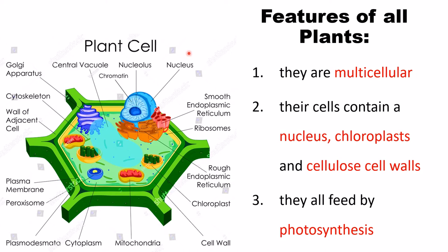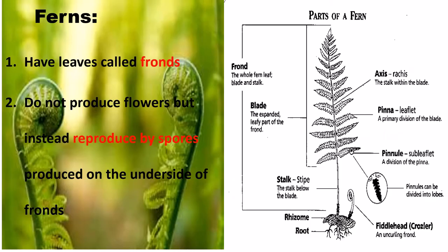The main features of all plants: plant cells are multicellular, their cells contain a nucleus, chloroplast, and a cellulose cell wall. You can see a very distinct cell wall, nucleus, and chloroplast. They all feed by photosynthesis.